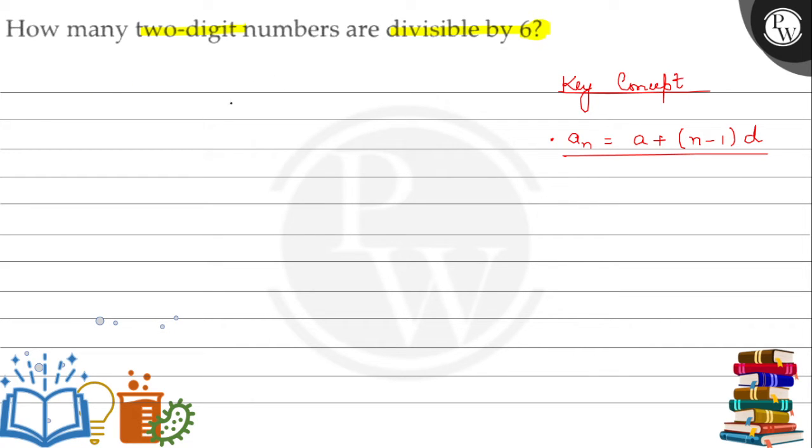The question asks how many two-digit numbers are divisible by 6. The first two-digit number divisible by 6 is 12, then 18, then 24, then 30, and so on respectively.